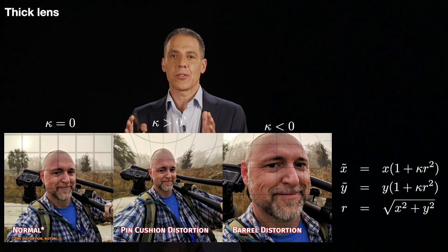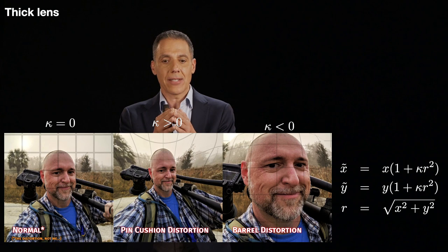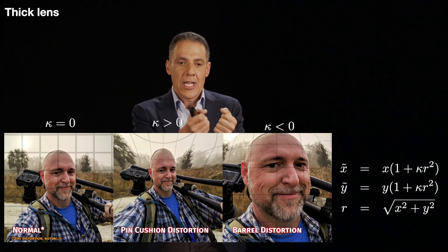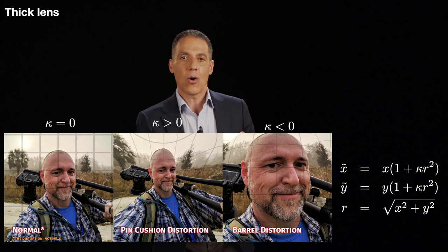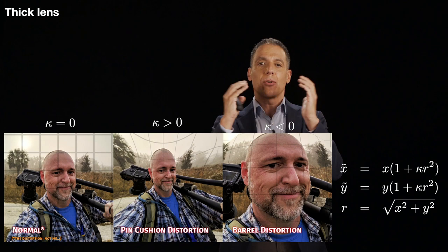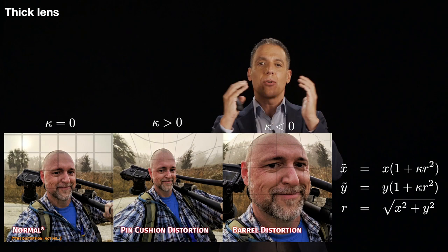Now, what happens when kappa is greater than zero? Well, what's going to happen is that X hat and Y tilde are going to increase proportional to their distance. So you're getting this sort of what's called pin cushion distortion, and the grid is being yanked proportional to the distance from the center. And then over here, when kappa is less than zero, things are going to move towards the center, proportional to the distance. And you get this barrel distortion. So it's as if you've moved too close to the person and it's getting distorted.